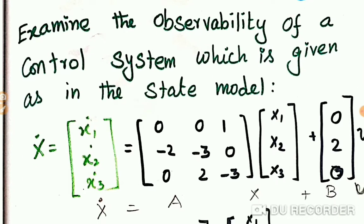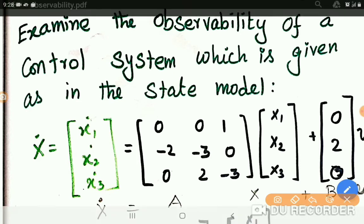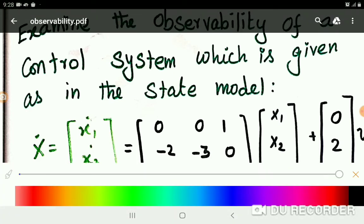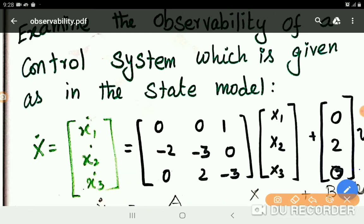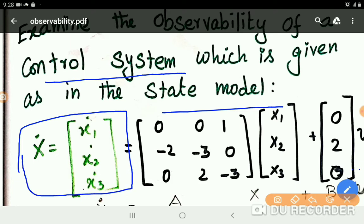Now examine the given problem for observability test. According to the given control system, the state model is given as x dot. It has three variables: x1 dot, x2 dot, x3 dot, and the A matrix also given, and x1, x2, x3 inputs given, and B matrix along with a u given.